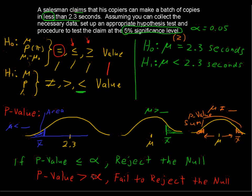You then write the conclusion that goes along with the decision. If you reject the null, you can say the mean is less than 2.3 seconds — the alternative looks pretty good. If you fail to reject the null, you say we don't have enough evidence to conclude that the mean is less than 2.3 seconds. So that's the process for hypothesis testing.